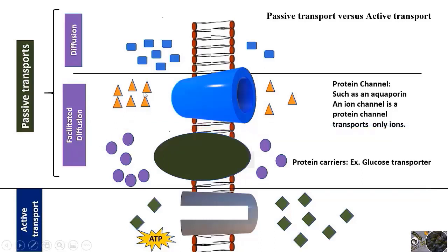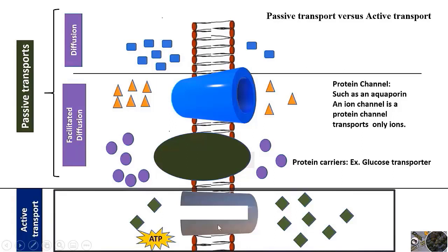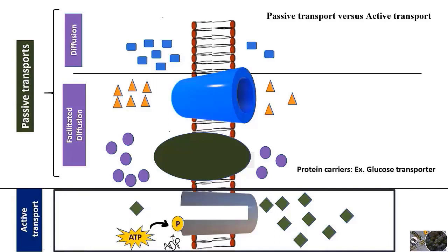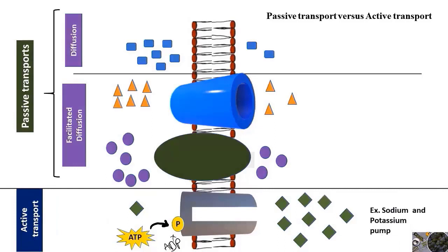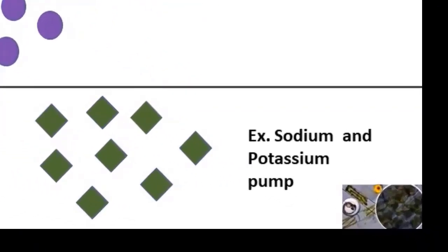In diffusion or facilitated diffusion, because molecules move down their concentration gradient, no energy is required. On the other hand, in active transport you have carrier proteins — transmembrane proteins — but molecules are sent from a low concentration region to a region with higher concentration. To transport molecules against their concentration gradient, the cell needs to expend energy by hydrolyzing ATP. This is an example of primary active transport. An example of active transport is the sodium-potassium pump.